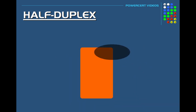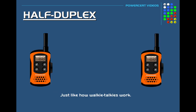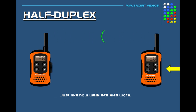Half duplex is just like how walkie-talkies work. With walkie-talkies, a person has to press a button to transmit their voice to the other person. While the button is pressed, information is only going in one direction — they can't hear the other person while transmitting. They would have to release the button in order to receive the other person's transmission.